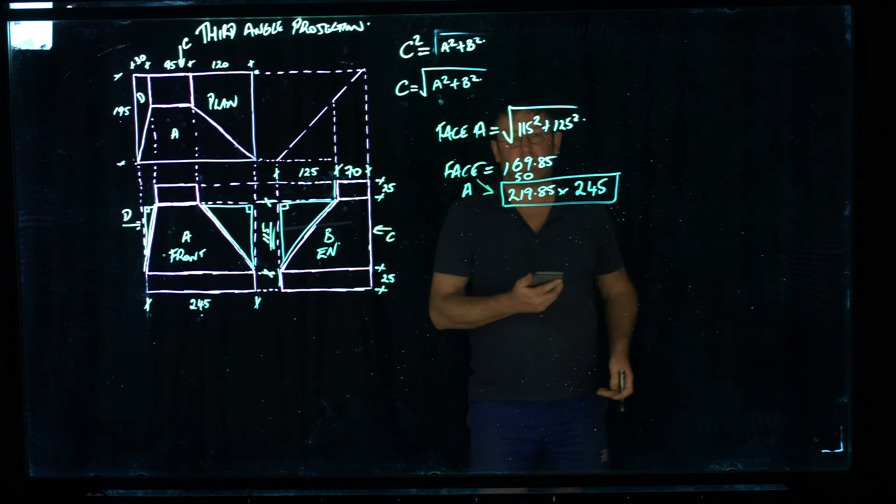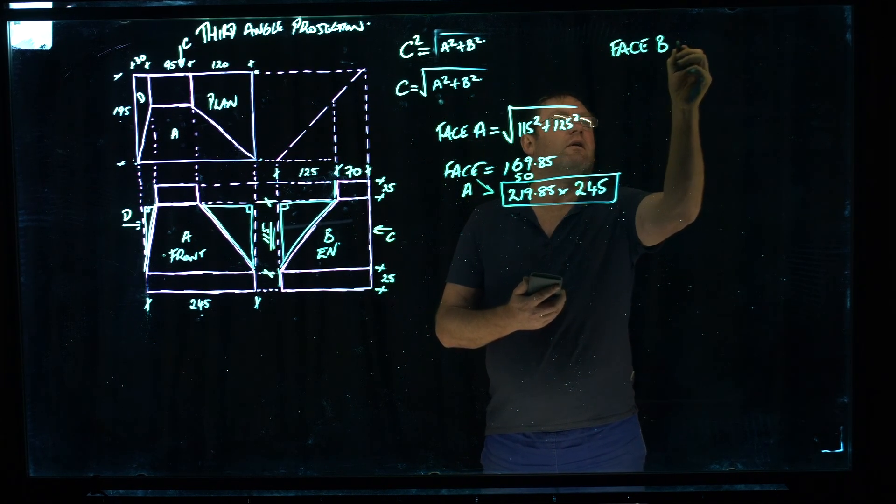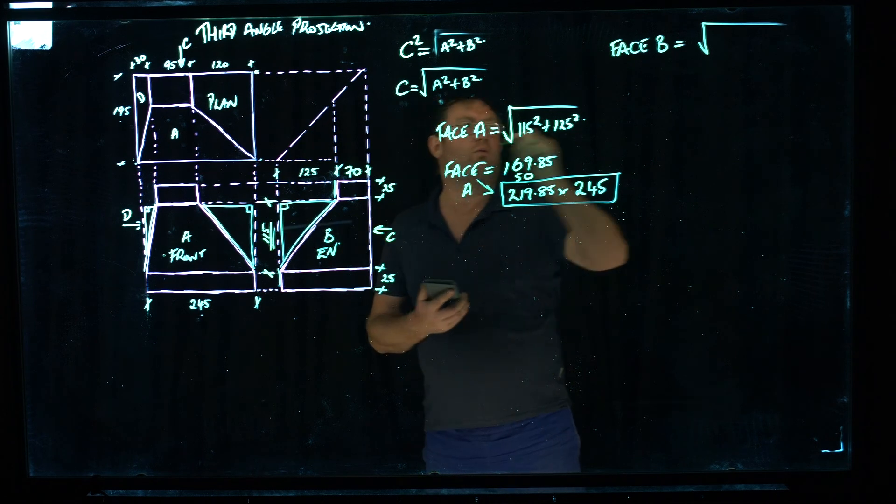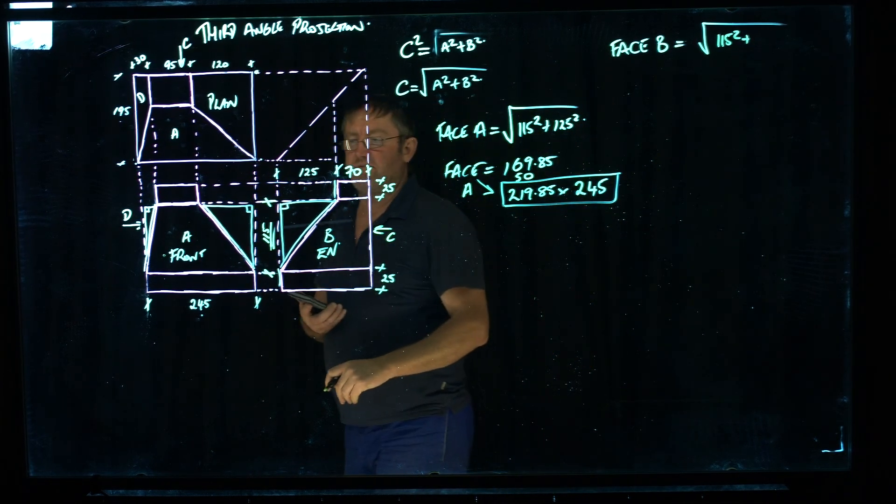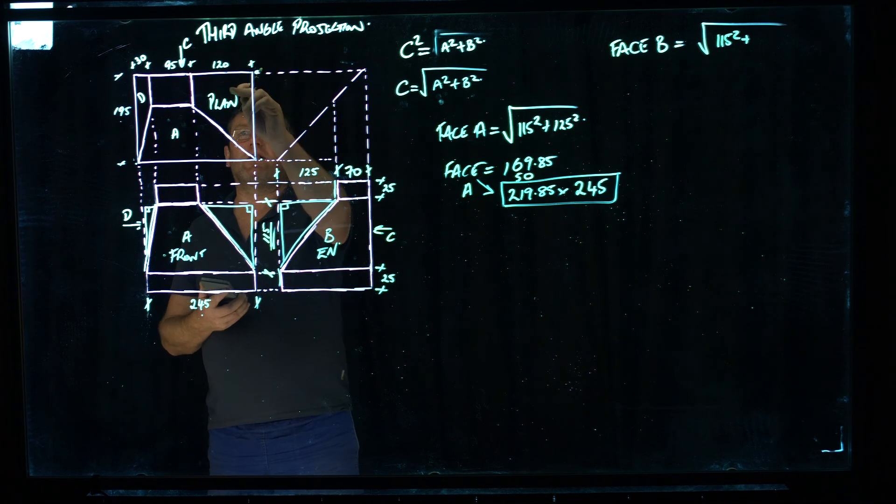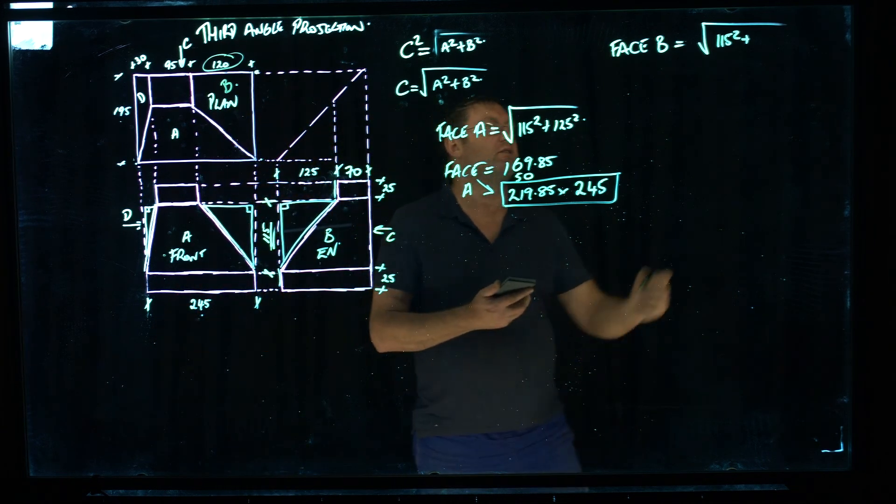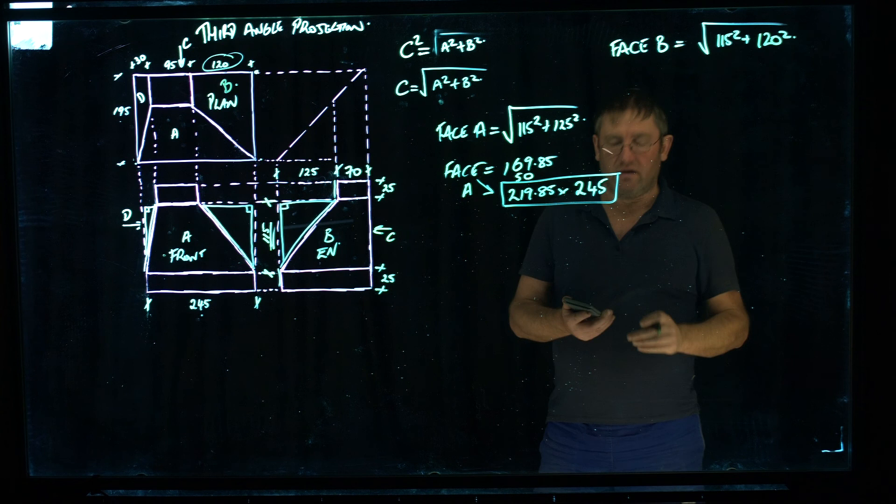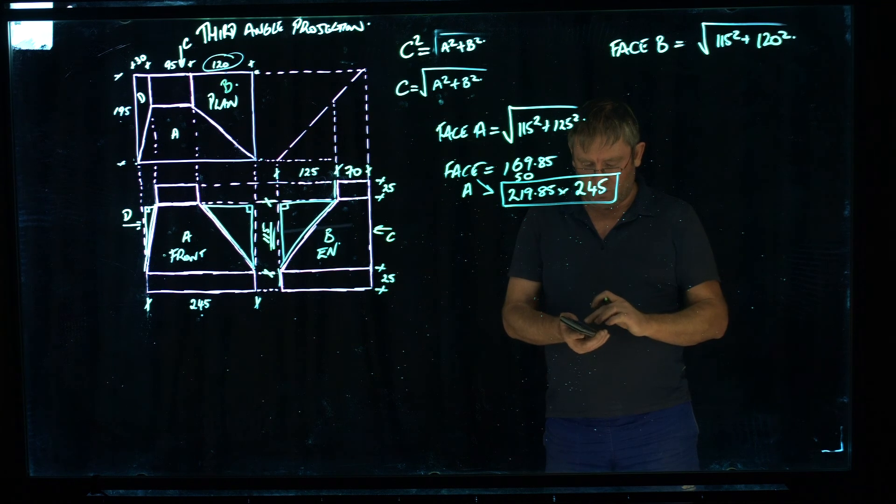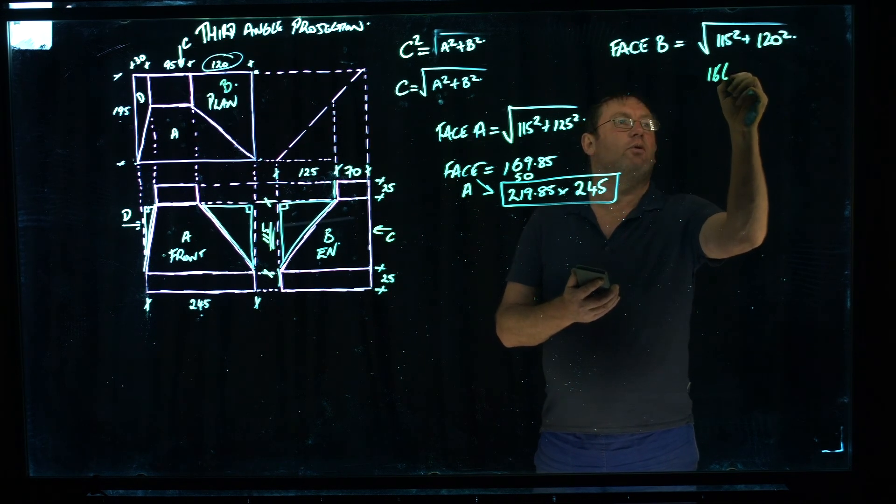Face B equals square root. I said that A in the equation was going to be 115. And the offset for B, well, it's actually this end view. If we come around the corner in plan view, this is actually face B here. So we can see that the offset for it is 120mm. So we're going to type in 120 squared there. Do that on the calculator. Push the square root symbol. 115 squared plus 120 squared equals.